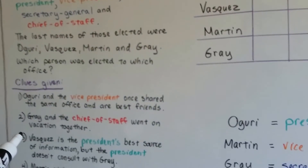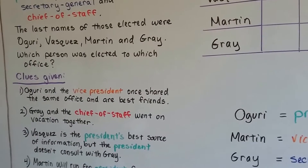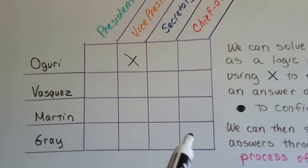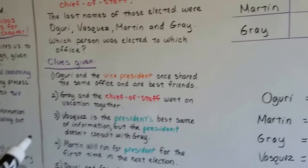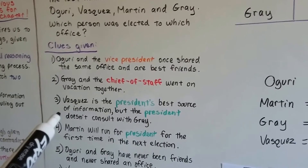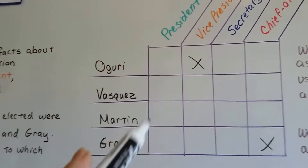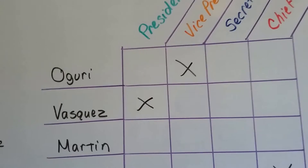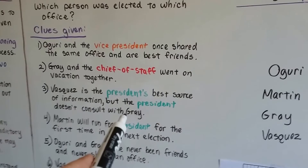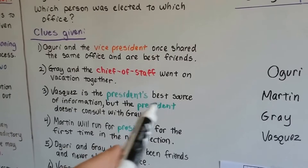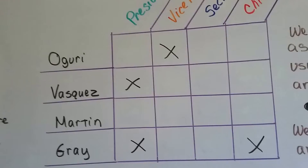The second clue says Gray and the Chief of Staff went on vacation together, so Gray cannot be the Chief of Staff. We put an X for Gray under Chief of Staff. The third clue says Vasquez is the President's best source of information — if he's the President's best source of information, he's not the President. So for Vasquez, we put an X under President. It also says the President doesn't consult with Gray, so Gray can't be the President either. We put an X for Gray under President.